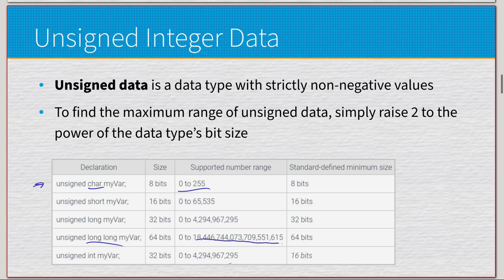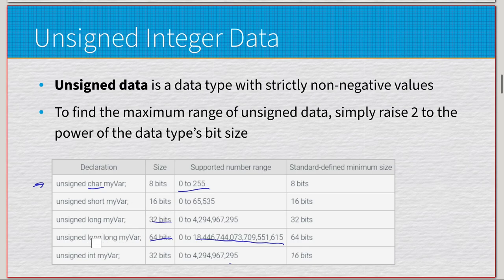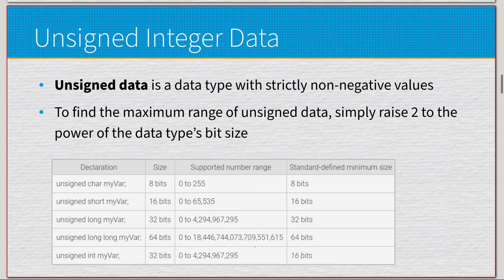64 bits is the largest value you can store on a consumer-grade CPU. If your CPU is a 32-bit processor, you cannot support 64 bits and would be locked at 32. Understanding binary helps a lot when it comes to understanding the ranges of data types: char has 8 bits and goes up to 255, short has 16 bits and goes up to 65,535, and so on. With unsigned data types, they always start at zero.